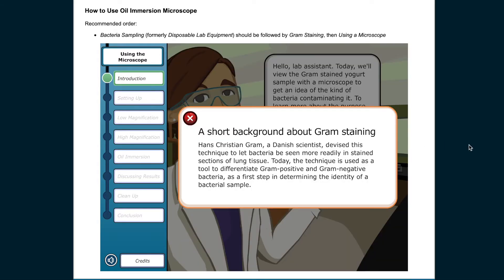A short background about gram staining. Hans Christian Gram, a Danish scientist, devised this technique to let bacteria be seen more readily in stained sections of lung tissue. Today, the technique is used as a tool to differentiate gram-positive and gram-negative bacteria as a first step in determining the identity of a bacterial sample.